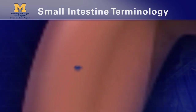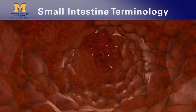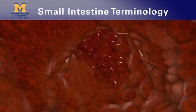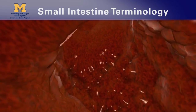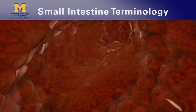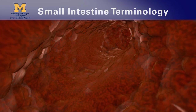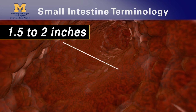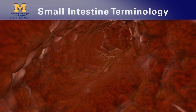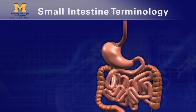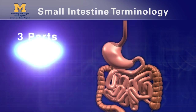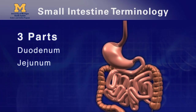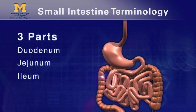Now we're inside the small intestine, where we absorb most of the nutrients in our food. Although it's more than 3 times as long as the large intestine, it's called the small intestine because it's only about 1.5 to 2 inches around. People with IBD will hear specific terms used to refer to the 3 parts of the small intestine.